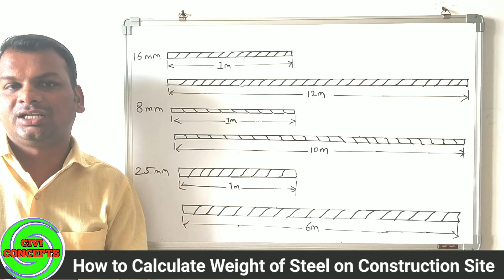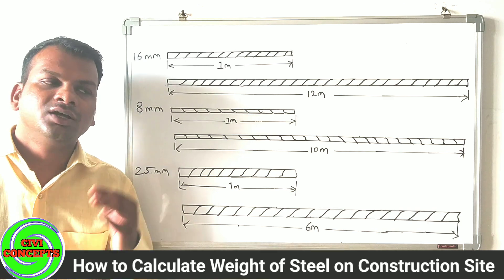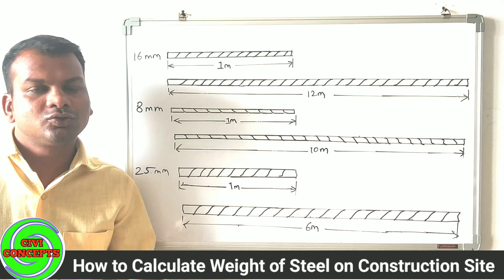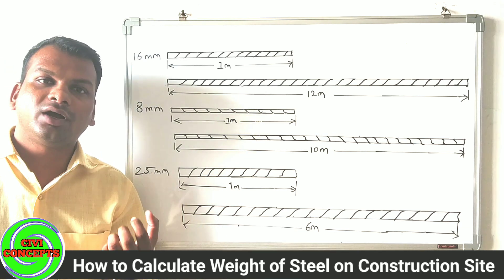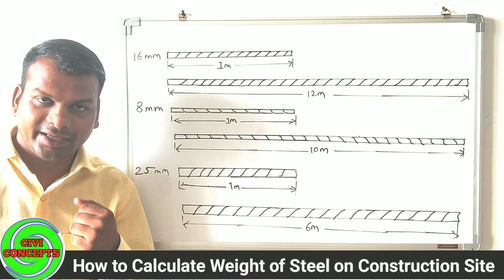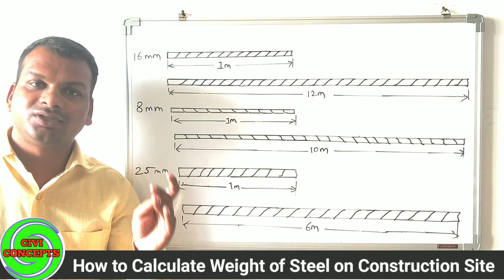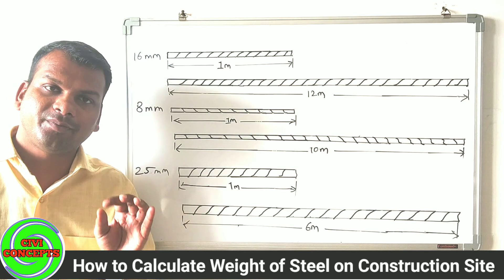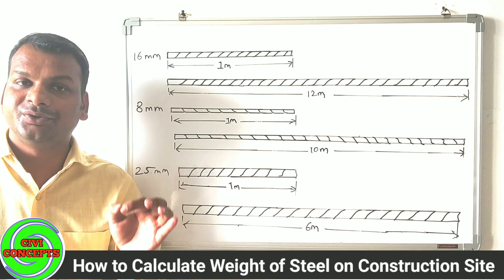How do you get the weight of steel? If we want to get the weight of steel, we will need the unit weight. Any bar — 8mm, 10mm, 12mm, 16mm, 25mm — for any diameter bar, the weight of 1 meter length is called the unit weight.